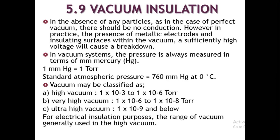As per the standards, high vacuum is defined when the pressure is reduced to 10⁻³ to 10⁻⁶ Torr. Torr is the smallest unit of pressure; one mmHg is equal to one Torr. Very high vacuum has a range of 1×10⁻⁶ to 1×10⁻⁸ Torr, and ultra-high vacuum exceeds 10⁻⁹ Torr — the range is 10⁻⁹ and below.